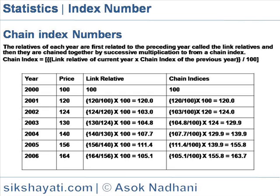Chain Index is equal to link relative of current year multiplied by chain index of previous year, divided by 100. Link relatives reveal annual change with reference to the previous year, but when they are chained, they change over a fixed base from which they are chained.